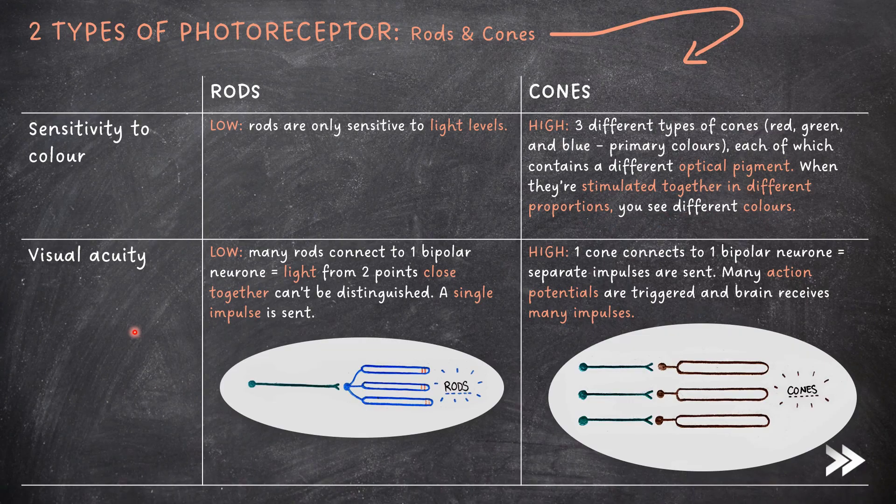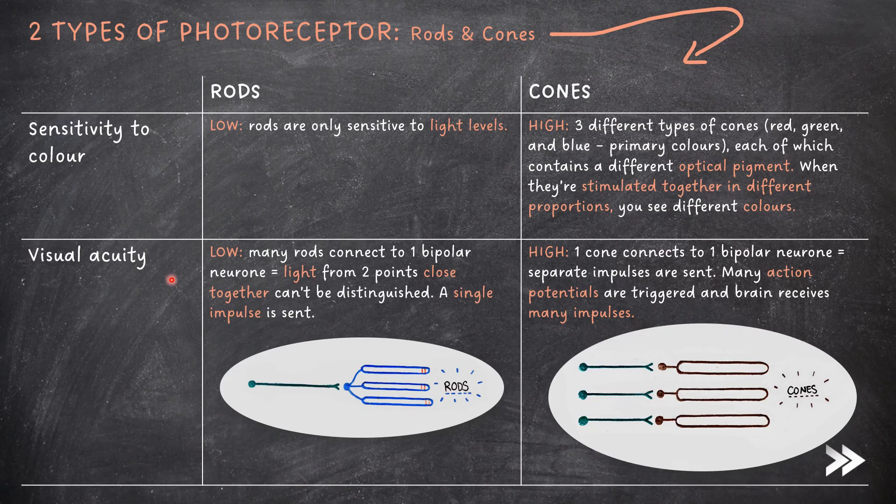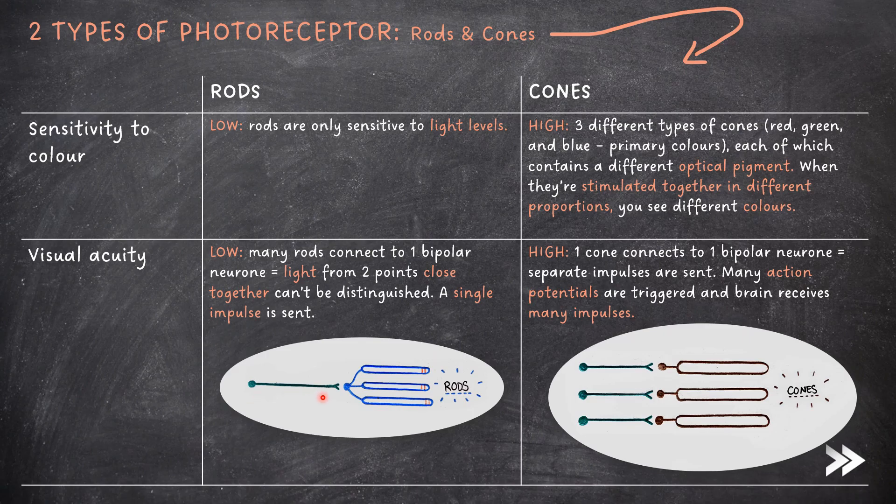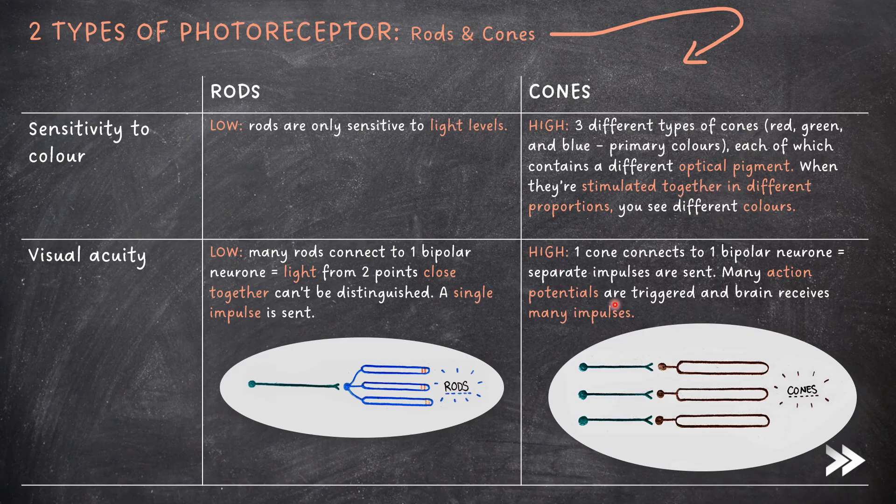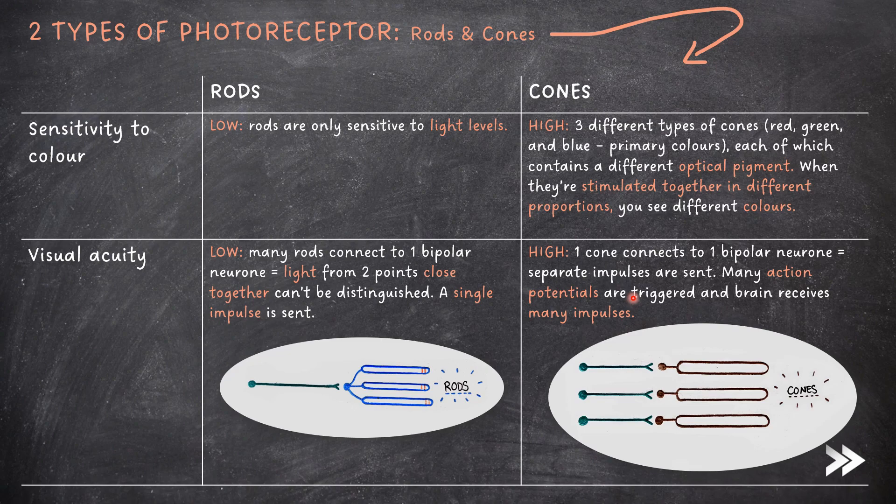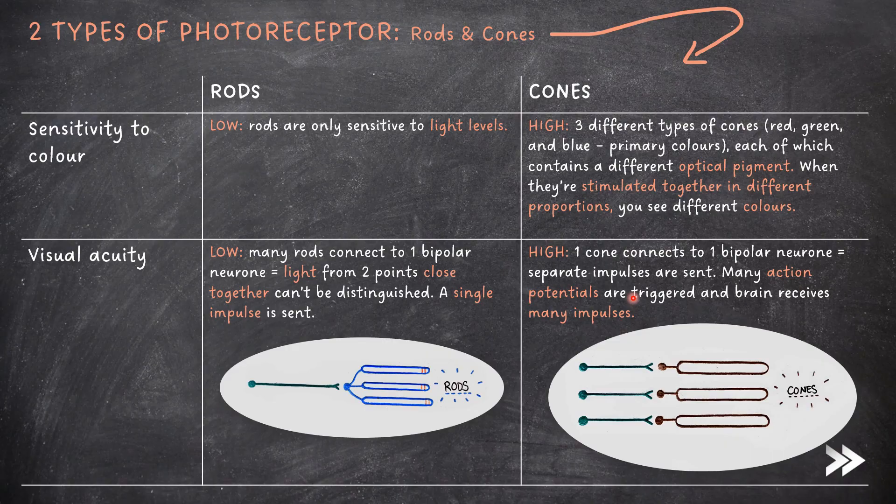Finally, we have visual acuity. Rods have a low visual acuity, because many rods connect to one bipolar neuron, meaning that light from two points close together can't be distinguished. Only one single impulse is therefore sent. Cones, on the other hand, have a high visual acuity. This is because one cone connects to one bipolar neuron, meaning that separate impulses are sent. Many action potentials are therefore triggered, and the brain receives many impulses.